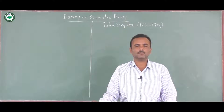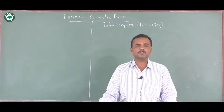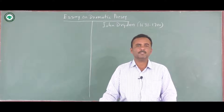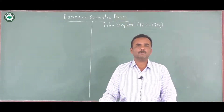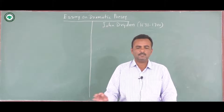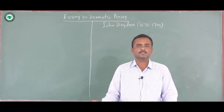Dear students, in the last lecture we talked about how John Dryden expressed his views on literature or drama in particular through the Essay on Dramatic Poetry. We also discussed that the essay is written in the form of a debate or interlocution between four characters, each of them expressing their views on literature, especially drama. Today we are going to discuss the views proposed by Crites, who defends the ancient or Greek dramatists.